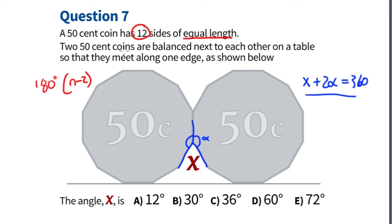In this case we have 12 sides, so the sum of all interior angles is 180 degrees times 10, which is equal to 1800 degrees.